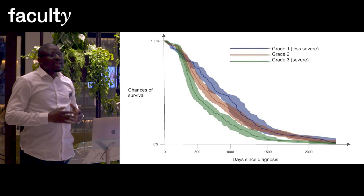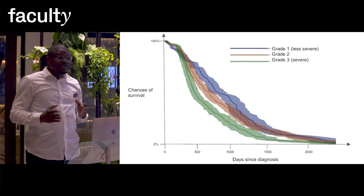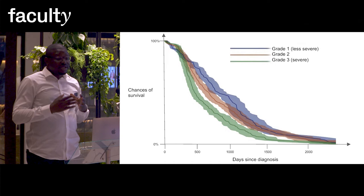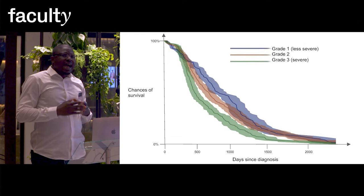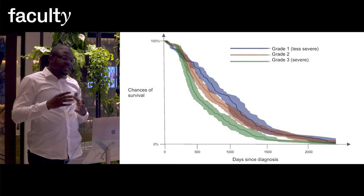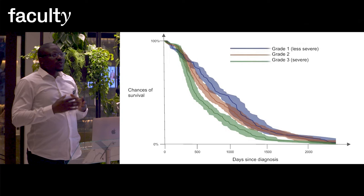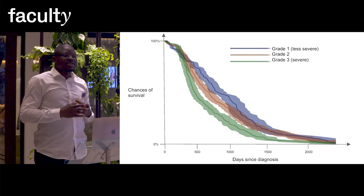This model is able to estimate the risk of groups of patients across timelines from the day of diagnosis. Patients that have grade 3 cancer have a higher risk compared to those that have grade 1. The advantage of using the Bayesian approach is that we also have the credible interval, which is the shaded area. This means that with 95% probability, the estimated risk is likely to fall in this shaded area.